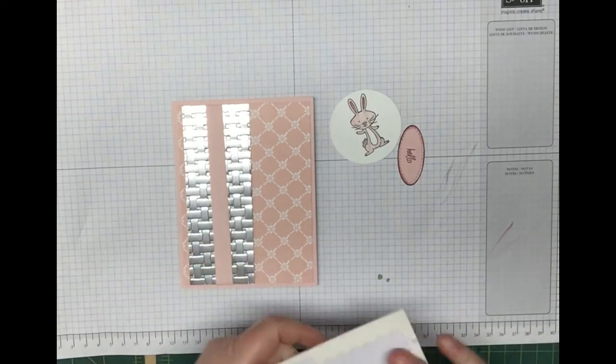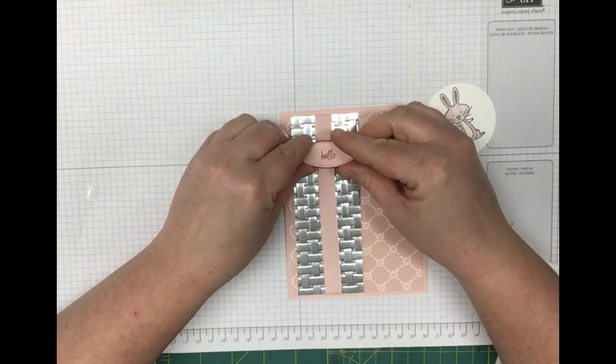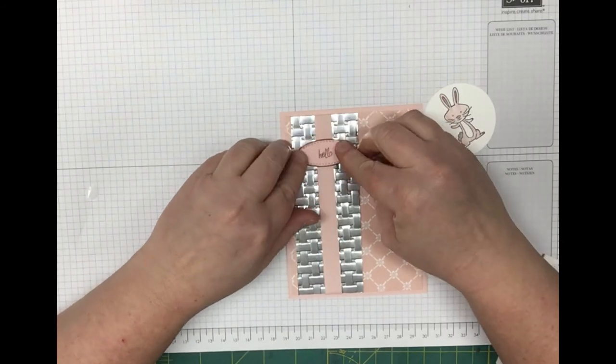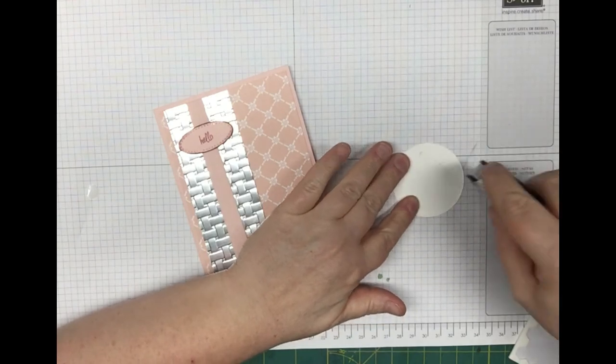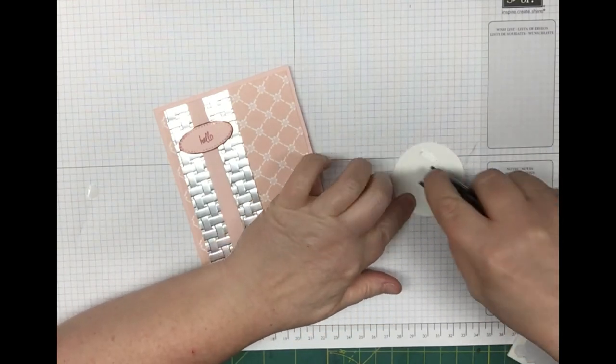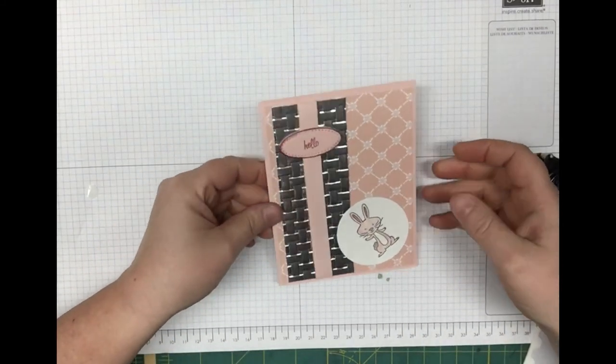We're just going to put this together. I'm going to use Stampin' Up dimensionals for my hello and put this up towards the top right over my little ribbon. The little bunny, I'm just going to glue him flat down with some Snail adhesive. I angled him on the front like that.